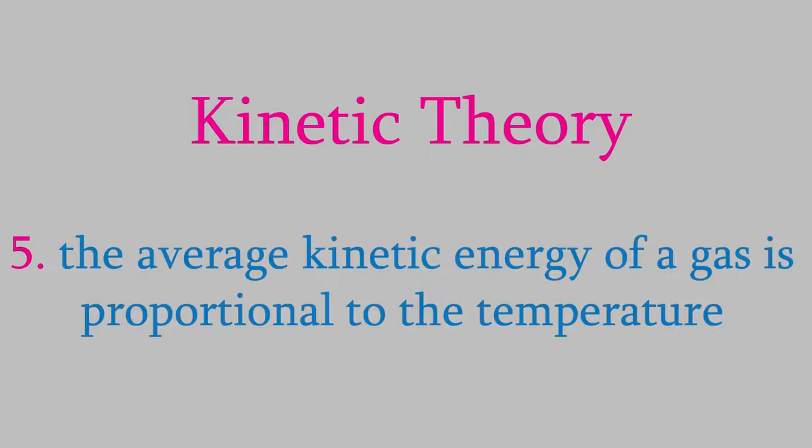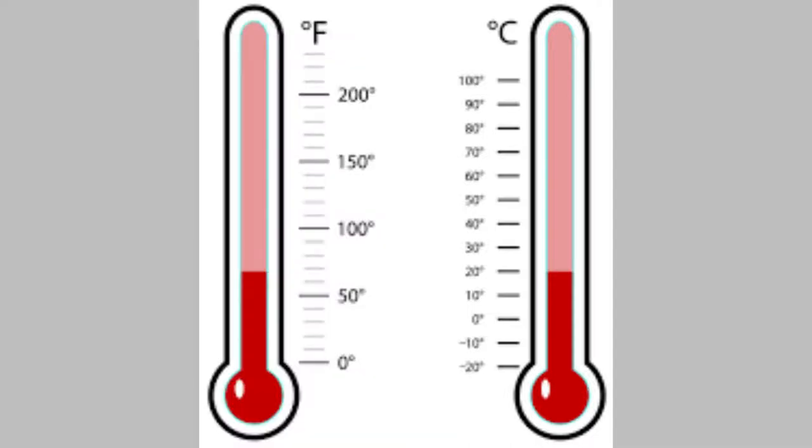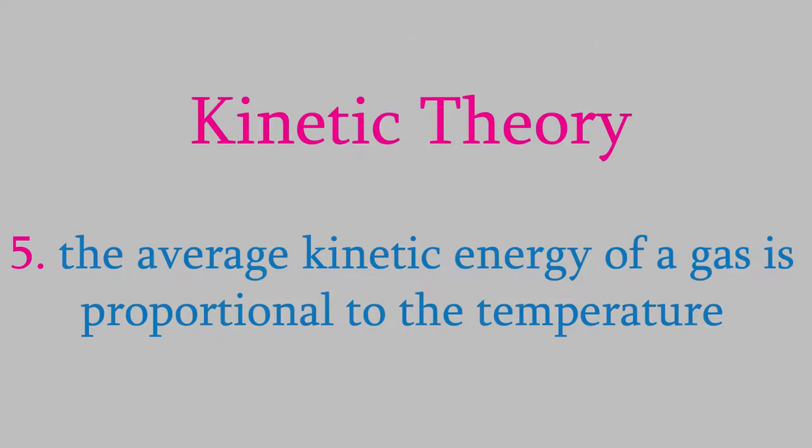By now you're used to using Celsius temperatures in your chemistry courses. If you live in the US, that probably took a little getting used to, since non-scientists in the US tend to use the Fahrenheit scale instead. But from now on, in this course, we won't want to use either one of those temperature scales. The reason has to do with something we just mentioned. We just saw that the kinetic theory tells us that a gas's temperature is proportional to its kinetic energy. So when we lower the kinetic energy, the temperature goes down.